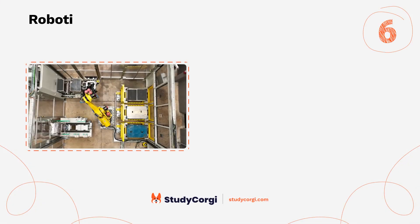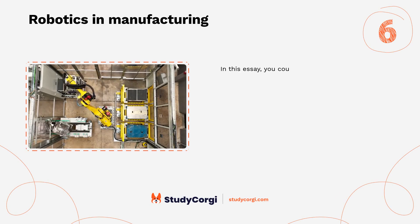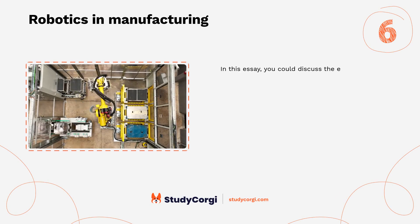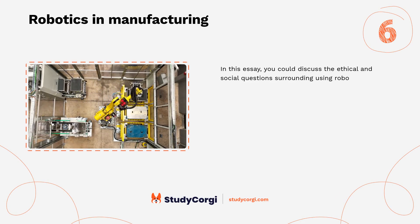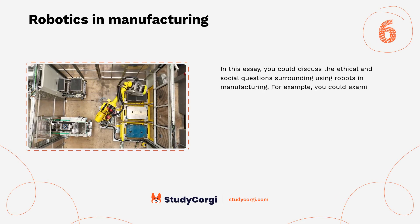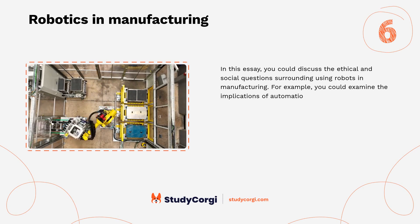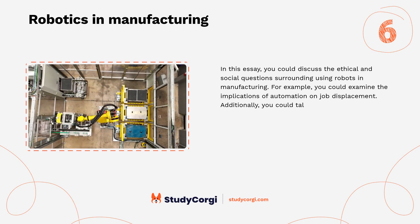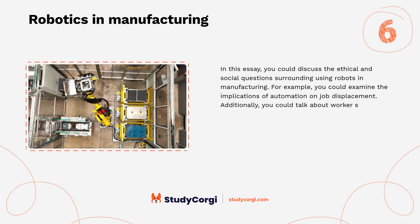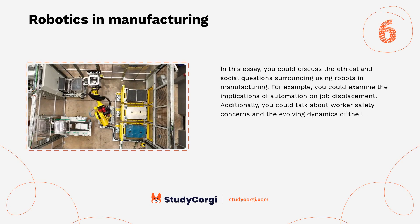Robotics in Manufacturing. In this essay, you could discuss the ethical and social questions surrounding using robots in manufacturing. For example, you could examine the implications of automation on job displacement. Additionally, you could talk about worker safety concerns and the evolving dynamics of the labor market.